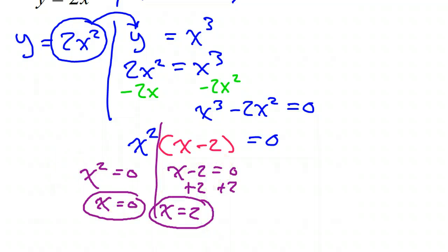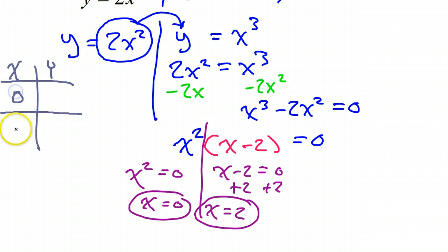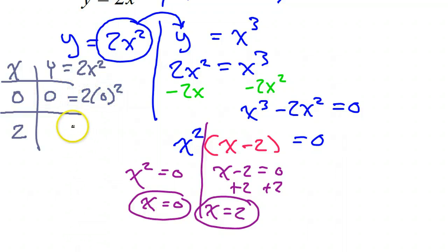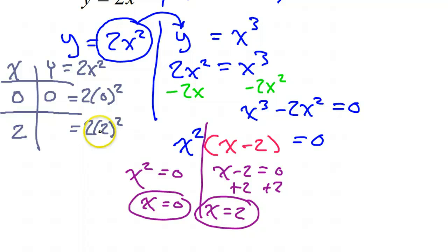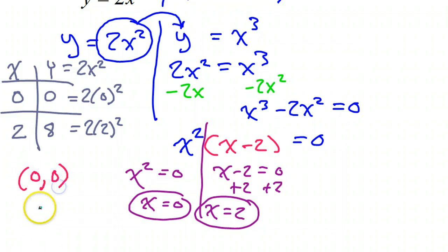I have two x values, so I need to find the y values that go with them. I'll make a t-chart: x values 0 and 2. Using y equals 2x squared: when x equals 0, y equals 2 times 0 squared, which is 0. When x equals 2, y equals 2 times 2 squared — 2 squared is 4, and 2 times 4 is 8. So that gives me two solutions: (0, 0) and (2, 8).